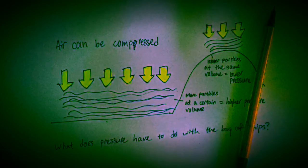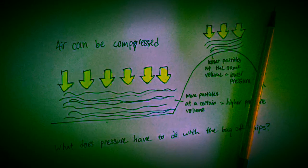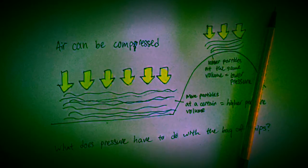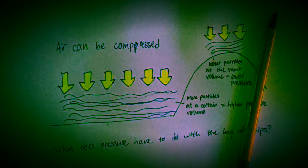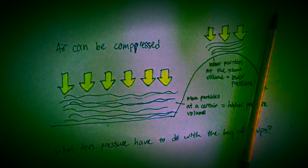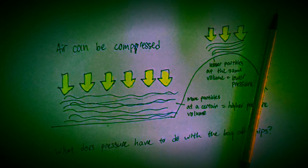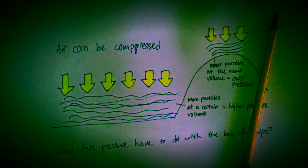The left portion of this diagram shows that there are more gas particles at a certain volume at a higher pressure, whereas the right side of this diagram shows fewer gas particles at the same volume at a lower pressure. Pause here to ponder, what does pressure have to do with a bag of chips?